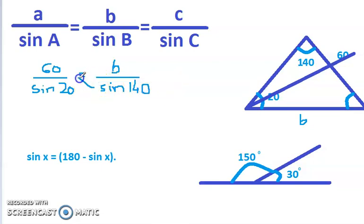So I'm going to take sine 140 and multiply it with the 60. That becomes 60 sine 140 divided by sine of 20, which is, I'm calculating this as I go along. So B becomes 112.76. And that is the length of the side B.